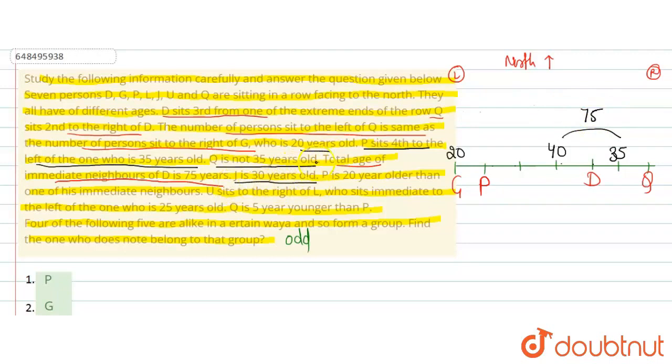Then given, J is 30 years old. That means confirm that J comes here, 30 years old. Then given, P is 20 years older than one of his immediate neighbors. So here this is 20. So 20 plus 20 is 40. 40 already exists. So 30 plus 20 that will be 50. So P's age becomes 50.